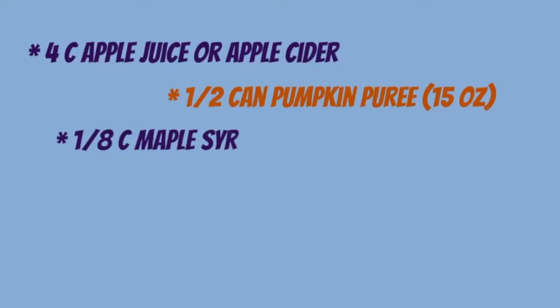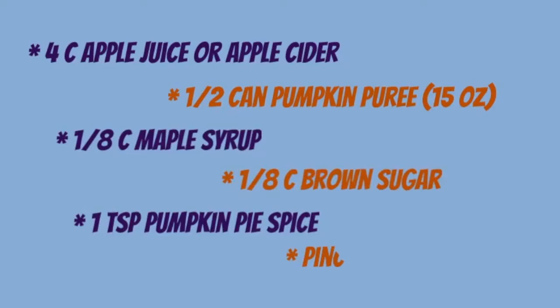To follow along, you'll need four cups apple juice, half a can pumpkin puree, eighth of a cup maple syrup, eighth of a cup brown sugar, one teaspoon pumpkin pie spice, and a pinch of salt.